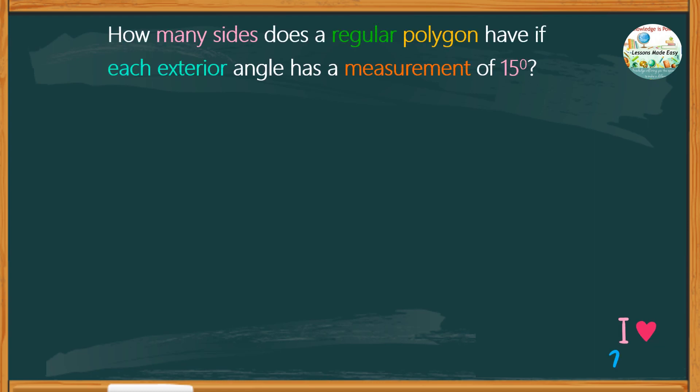Carefully analyze the given information. The problem is asking for the unknown number of sides of a regular polygon. It also states that each exterior angle measures 15 degrees. With this detail, we can definitely identify the number of sides of this polygon.